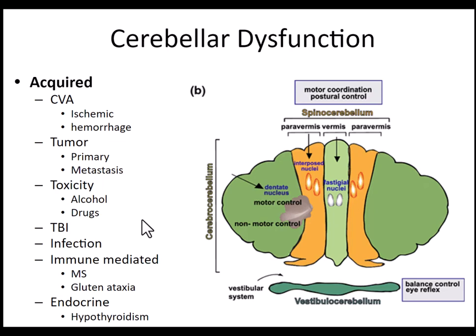Gluten ataxia is simply a sensitivity to gluten that results in ataxia. Additionally, hypothyroidism is an endocrine cause of cerebellar dysfunction.